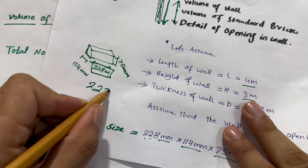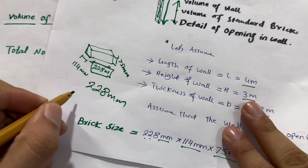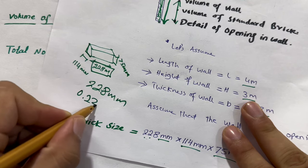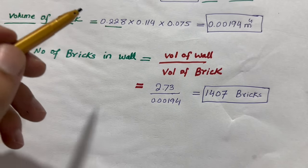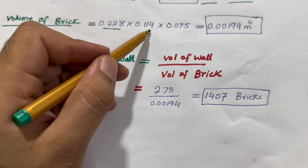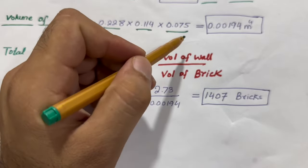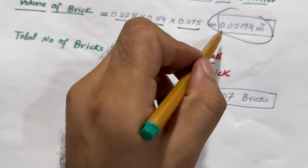0.114 is the width and this is the thickness. So this is the total volume of brick, 0.00194 meter cube.